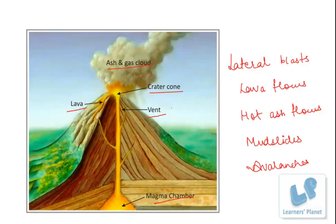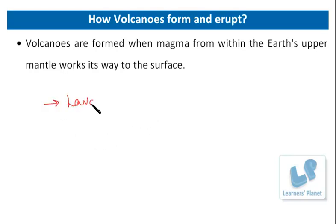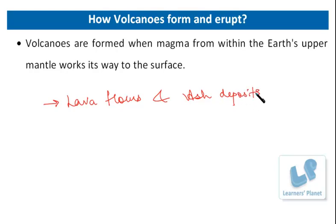Now let us see how these volcanoes are formed. Volcanoes are formed when magma from within the earth's upper mantle works its way to the surface. At the surface it erupts to form lava flows and ash deposits. Over time as the volcano continues to erupt, it gets bigger and bigger.